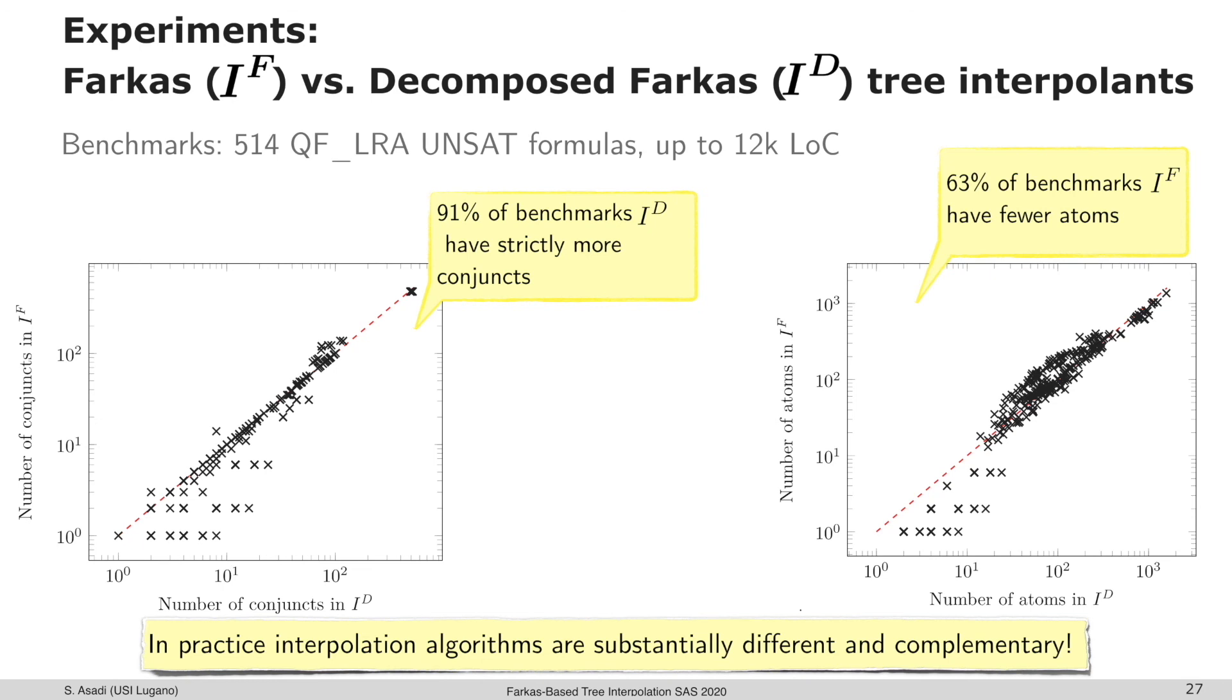On the right figure, we compared the number of unique LRA atoms, and the result is on 63% of benchmarks, Farkas interpolants have fewer atoms. This is also nice, indicating the complexity of the interpolants. Farkas interpolants would have smaller Boolean search space. The result is the algorithms are substantially different in practice and they are complementary.